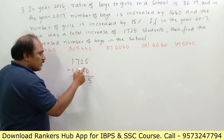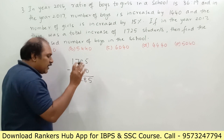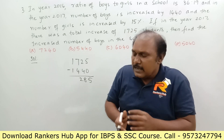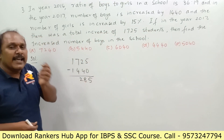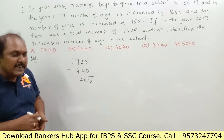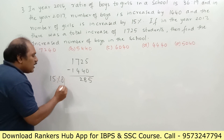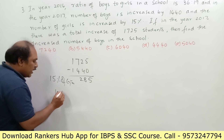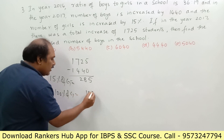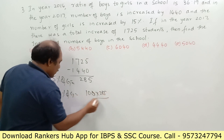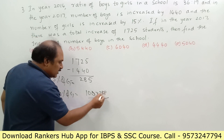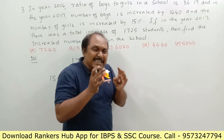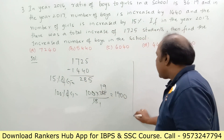Finding the difference: 1725 minus 1440 equals 285. This 285 is nothing but the number of new girls who joined the school in 2017, which is 15 percent of the girls in 2016. So 15 percent of girls equals 285. To find 100 percent: 100 into 285 divided by 15 equals 1900. So the number of girls in 2016 is 1900.